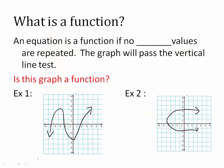First of all, what is a function? You should remember from Algebra 1 that an equation is a function if no x values are repeated — meaning there are all distinct x values and it never turns back on itself. The graph will then pass a vertical line test.